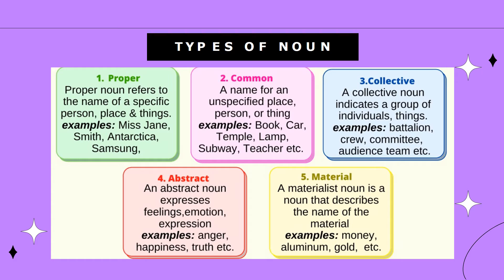Now let's have a look at the types of noun. There are five main types of noun. Number one is proper noun. Number two, common noun. Number three, collective noun. Number four, abstract noun. And number five, material noun.